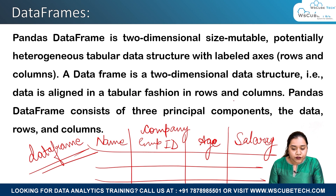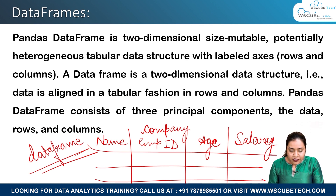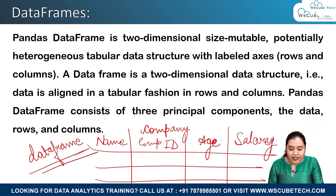A DataFrame is aligned in a table fashion with rows and columns. A pandas DataFrame consists of three principal components: the data, the rows, and the columns. The index could be the row, and we can have name, employee ID, age, and salary as the columns.